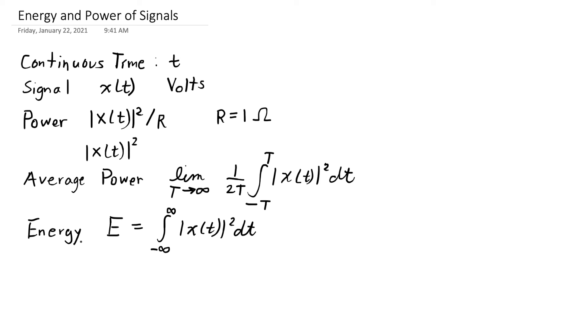Then we get into these cases where if the signal exists for only a short period of time, so it goes to zero and starts at zero, and it doesn't have infinite energy during any period of time, then it's going to have finite energy, and we're going to call this an energy signal.